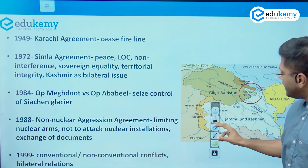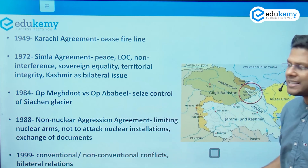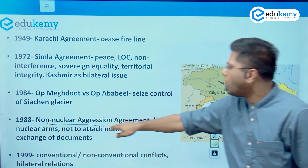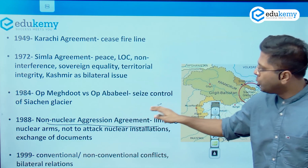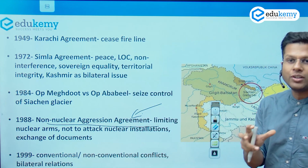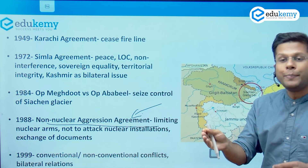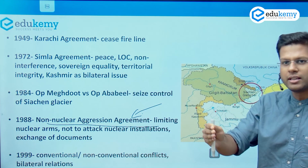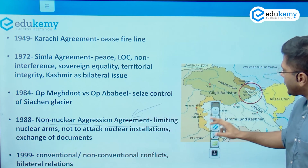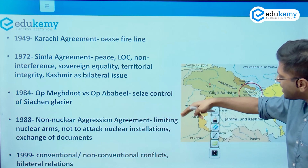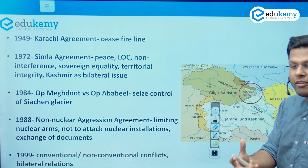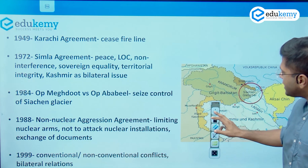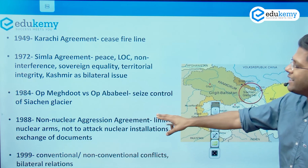In 1988, because India had started to conduct important military exercises along the Rajasthan border, Pakistan's Prime Minister said they wanted a non-nuclear aggression agreement. Both countries entered into this agreement, by which they would not attack each other's nuclear installations. They exchanged lists of their nuclear installations — important places like Rawat Bhata or Kakarapar — so that it would not harm the country's growth.